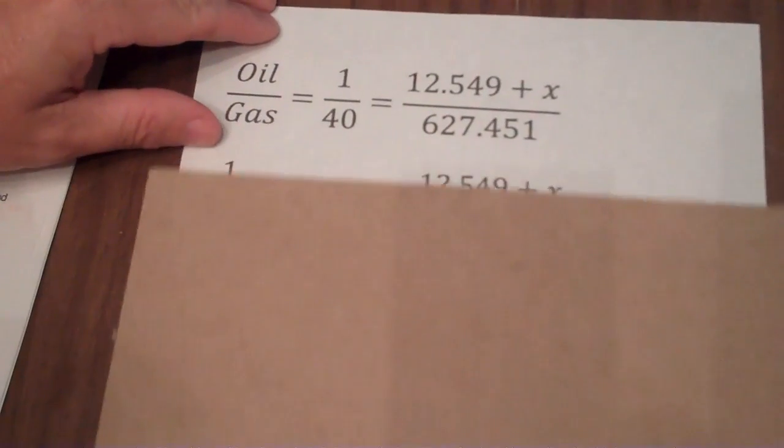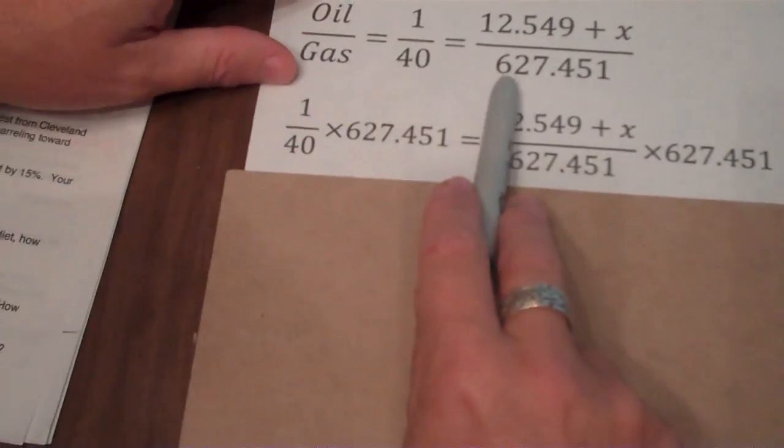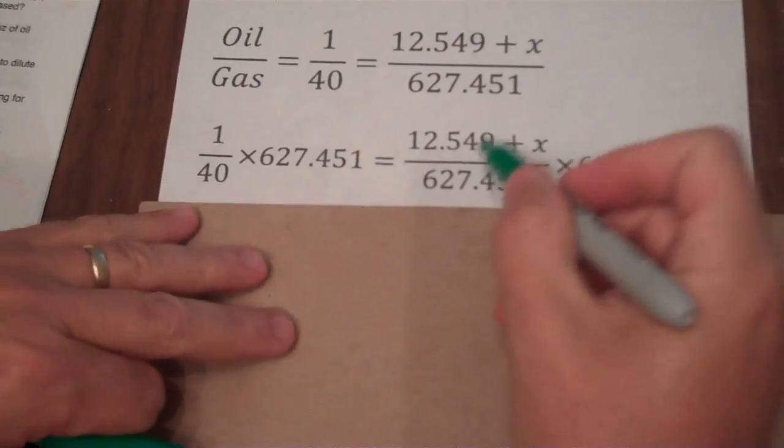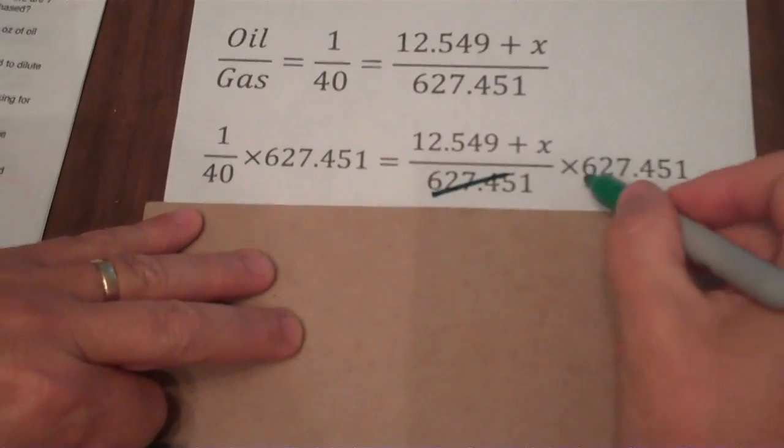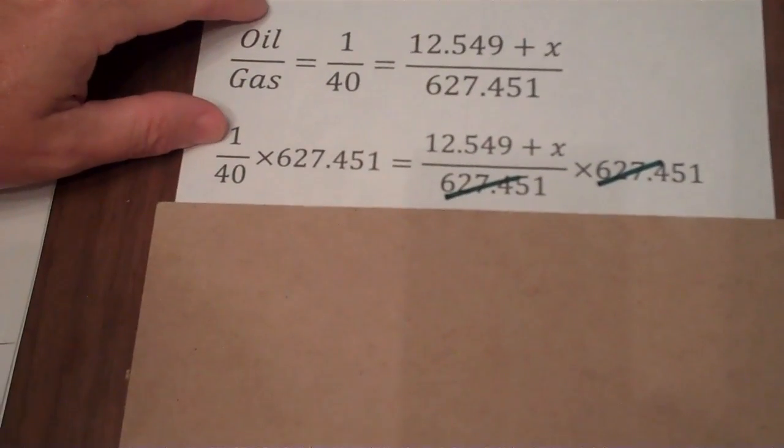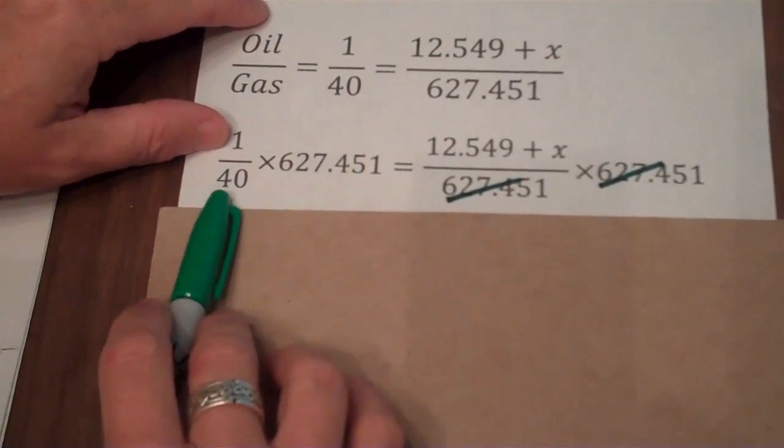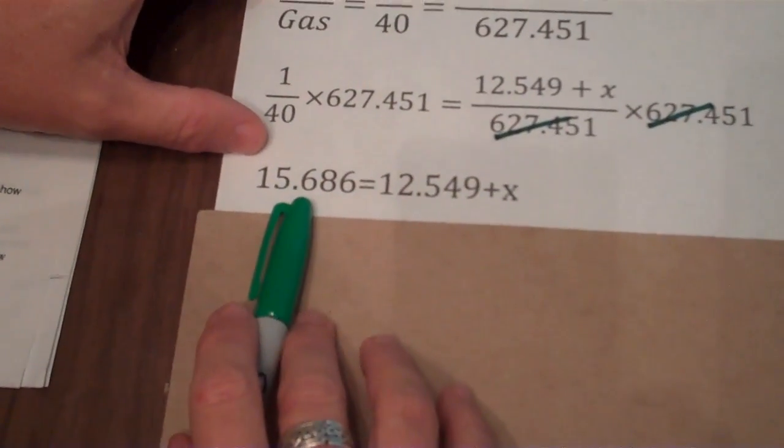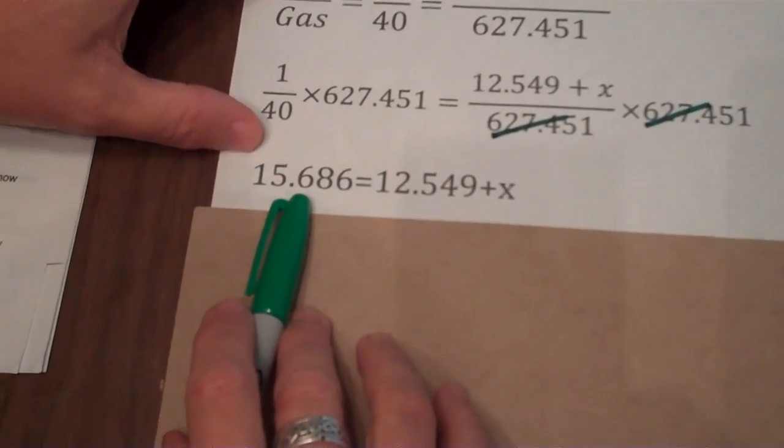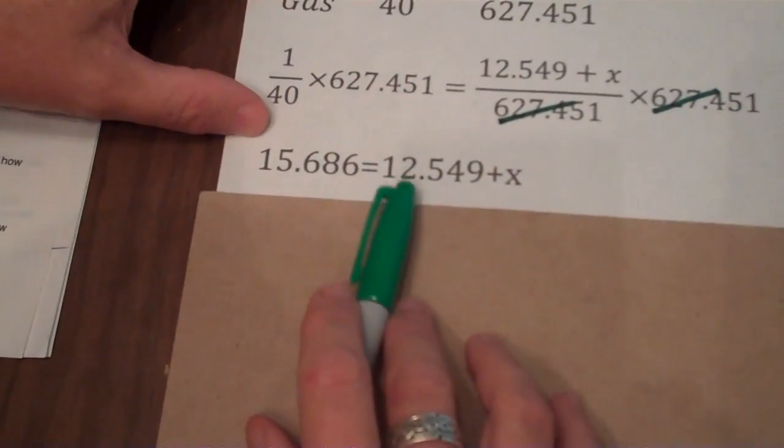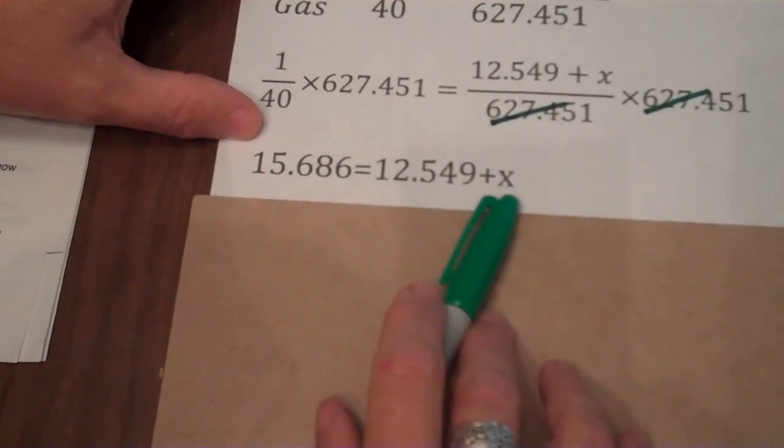Now, first thing I'm going to do is multiply both sides of this equation by this 627.451. I do that because on this side I know that that is going to cancel my denominator. On the left side I'll need to do the calculation of 1/40 times 627. That leaves me on the left side with 15.686. On the right side, with the denominator eliminated, I have 12.549 plus x.